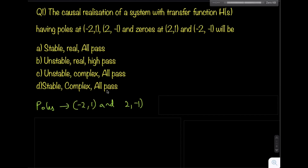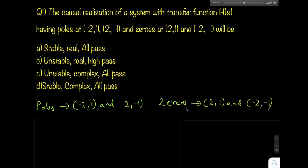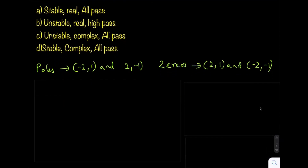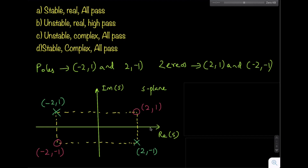The poles of the system are at (-2,1) and (2,-1), and the zeros are at (2,1) and (-2,-1). If we plot the pole-zero plot of this system in the s-plane, this will be the resulting pole-zero plot, where the horizontal axis is the real part of s and the vertical axis is the imaginary part of s.